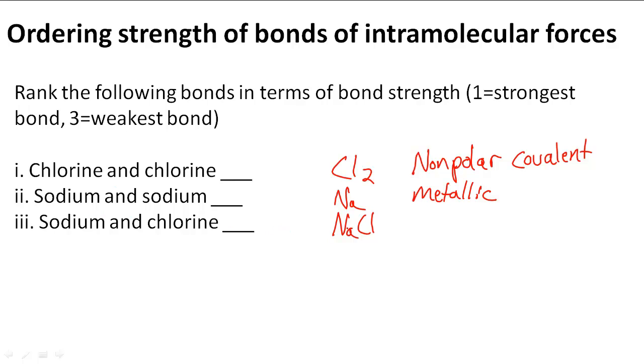And sodium and chlorine, sodium chloride that we have here, is actually an ionic bond because we have a metal and a nonmetal, and they transfer electrons. So ionic bond.